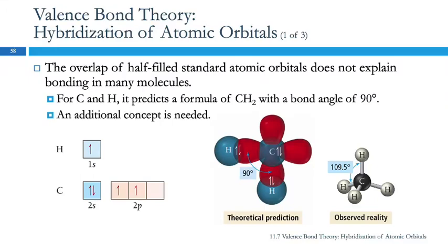For hydrogen and sulfur, we looked at the overlap of standard atomic orbitals and it didn't agree with VSEPR theory, but otherwise it didn't seem to be too much of a problem. But for a lot of other substances, it just doesn't work to look at the overlap of atomic orbitals. So let's look at one where this just does not work at all.